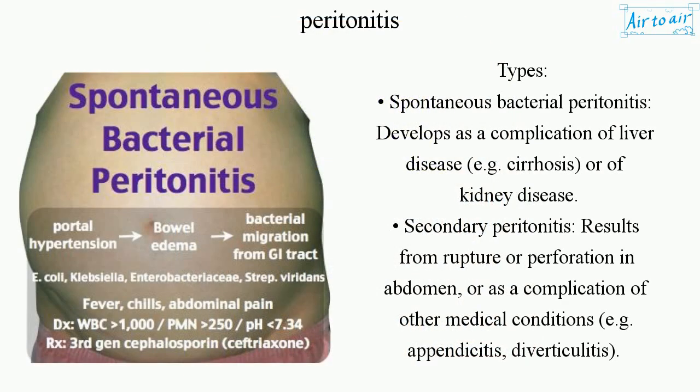Types: Spontaneous bacterial peritonitis develops as a complication of liver disease, such as cirrhosis, or of kidney disease. Secondary peritonitis results from rupture or perforation in the abdomen, or as a complication of other medical conditions such as appendicitis or diverticulitis.